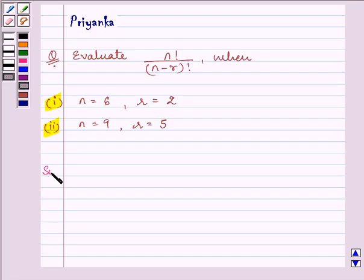Let us start with our solution of the first part. Now the expression given to us is n factorial divided by n minus r factorial.